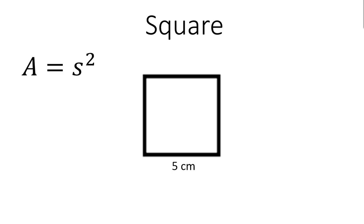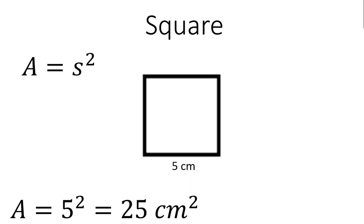First we have a square. A square has all sides that are equal, which is why I only labeled one side. I labeled it 5 centimeters, which means that all sides would be 5 centimeters. The area of a square is equal to S squared, where S stands for the length of one side. Substituting into the formula, area equals 5 squared, which is equal to 25 centimeters squared.